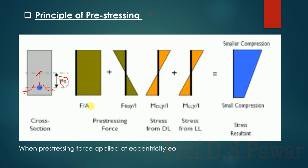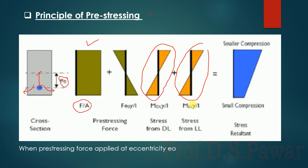If this is the cross section of the beam, we already have the direct stresses F by A. This force acts on the cross section area of the beam. New here is what happens due to eccentricity — earlier we saw two diagrams for live load and dead load bending stresses. Now a new stress is generated: the stress due to eccentricity.